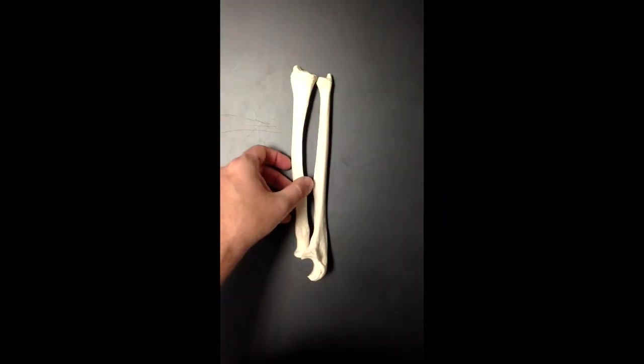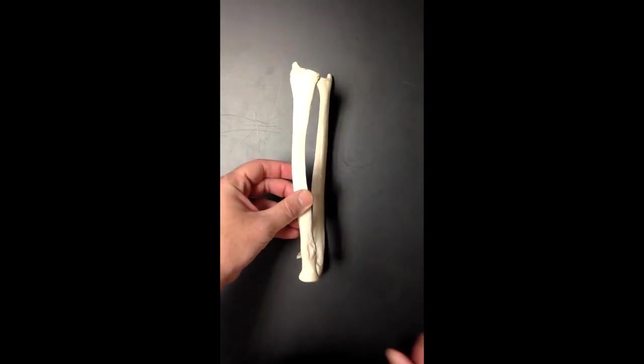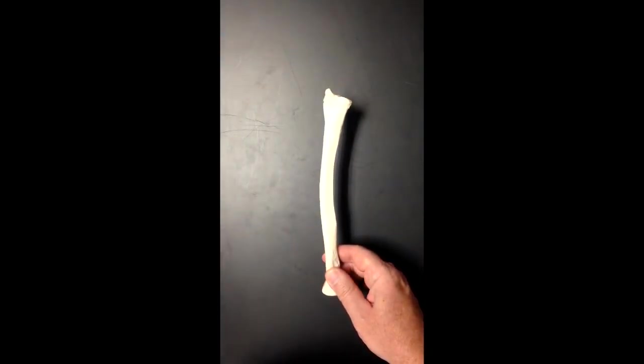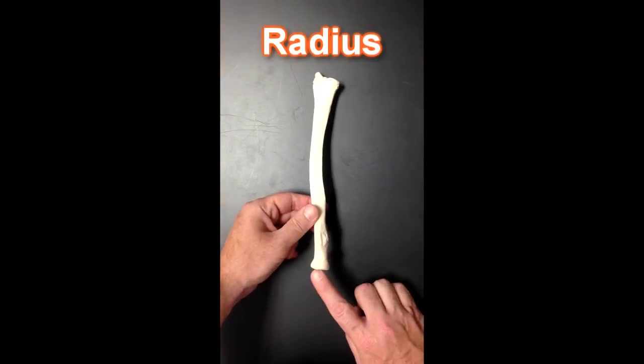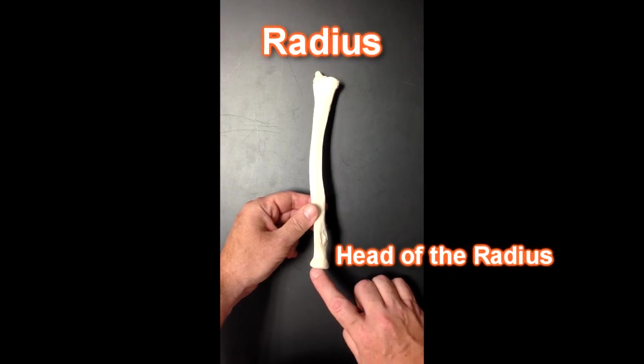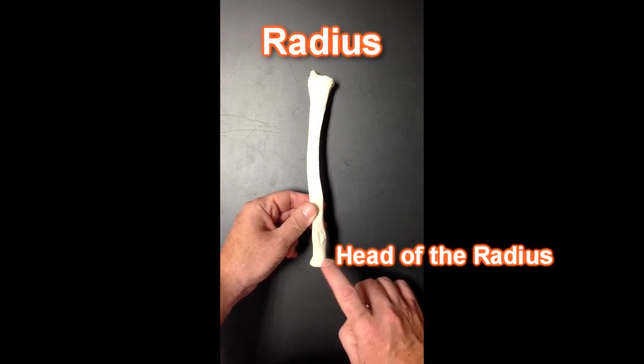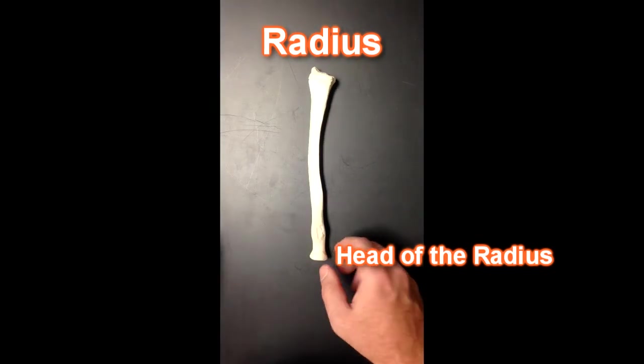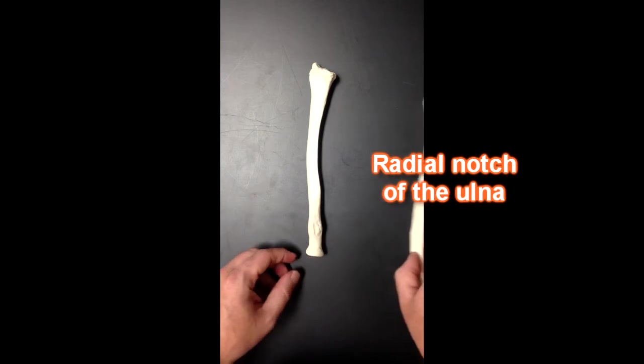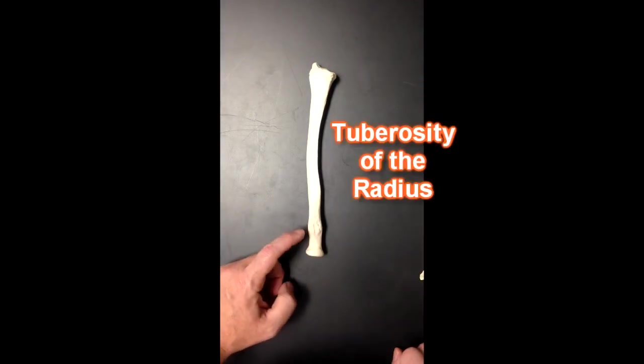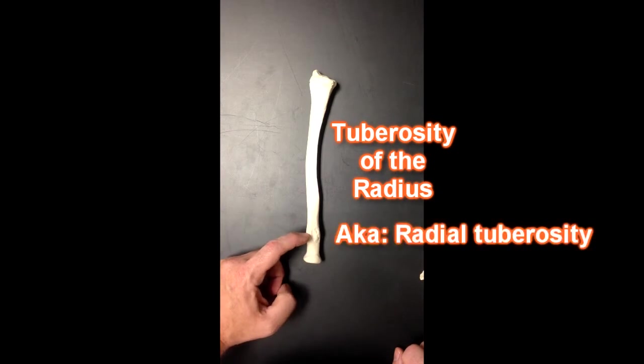Now some of the structures on these bones will help us identify them. I'll move that out of the way and just focus exclusively on the radius for now. We've got the head of the radius up here and a nice smooth articular surface right here that would articulate with the radial notch on the ulna. Down here we have the tuberosity of the radius or radial tuberosity. You'll learn later on that this is going to be a connection site for the biceps brachii muscle.